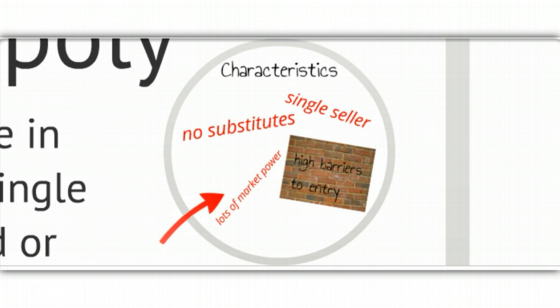Those high barriers to entry can be several things. One might be just financial costs, high costs of starting a business. Some businesses have such a high amount of money to start it that really not many people can. There also might be government regulations. Sometimes the government can actually grant government-sponsored monopolies through the use of licenses or patents.